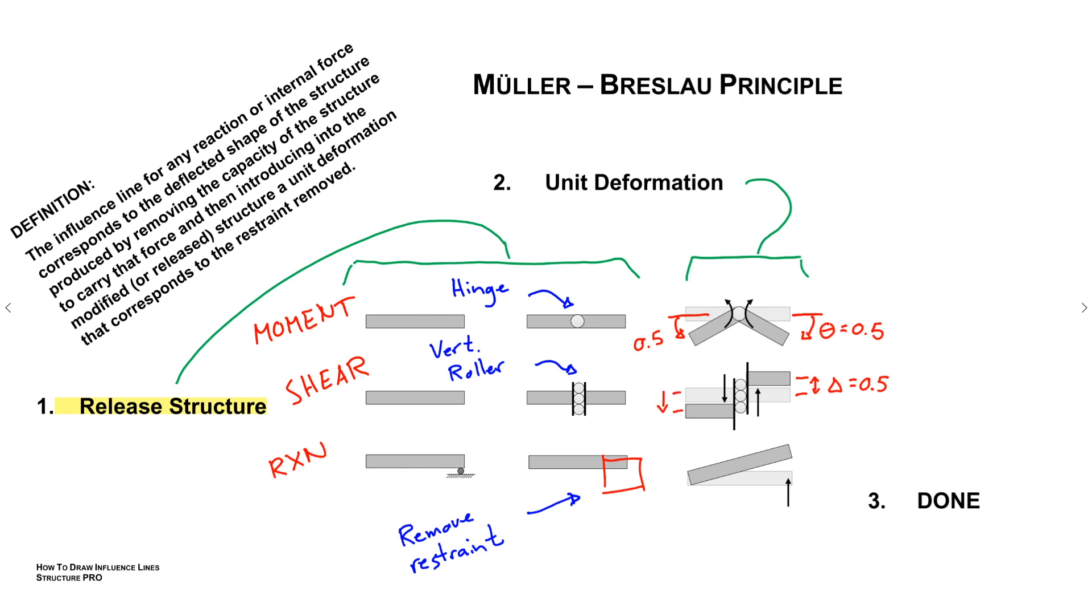And similarly for the shear with this vertical roller, we're going to push one side up and one side down and create a displacement of one. With the restraint, same thing. We're going to lift up that restraint or where the restraint was, a unit value of one, and then we're done.